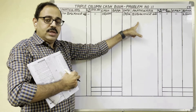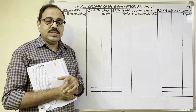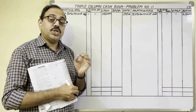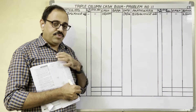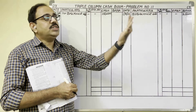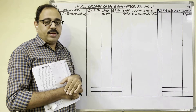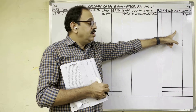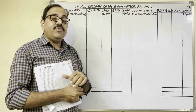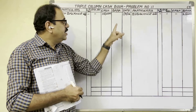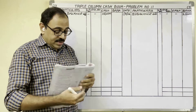The first two entries are opening balances; the remaining are transactions. To record transactions in a triple column cash book, there are two methods: journal entries method and shortcut method. In this problem I am using the shortcut method. According to that method: if cash is coming into the firm, write that amount in the debit side cash column; if cash is going from the firm, write it in the credit side cash column. For bank columns — if bank balance is increasing, write in the debit side bank column; if bank balance is decreasing, write in the credit side bank column.